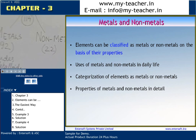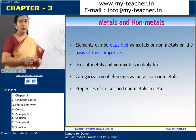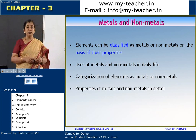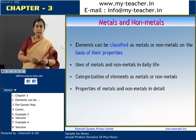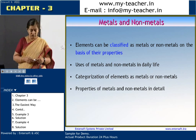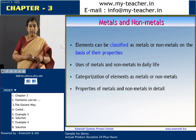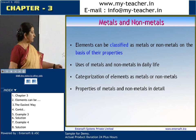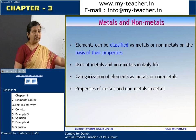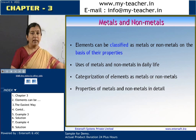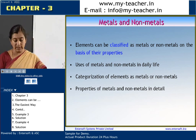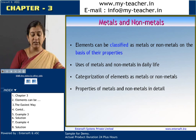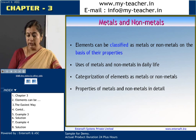To give you a few examples, metals include copper, aluminum, iron, magnesium, gold, silver, etc. Among the non-metals, we have carbon, sulfur, phosphorus, nitrogen, oxygen, etc.